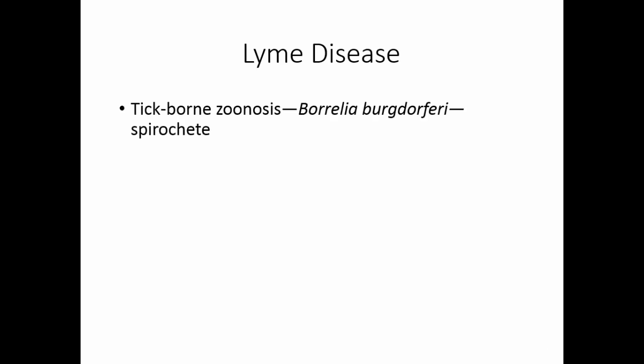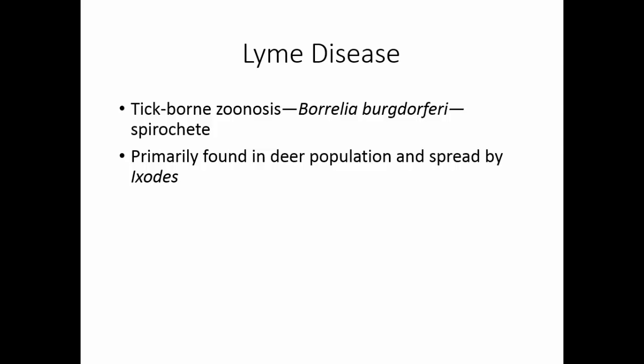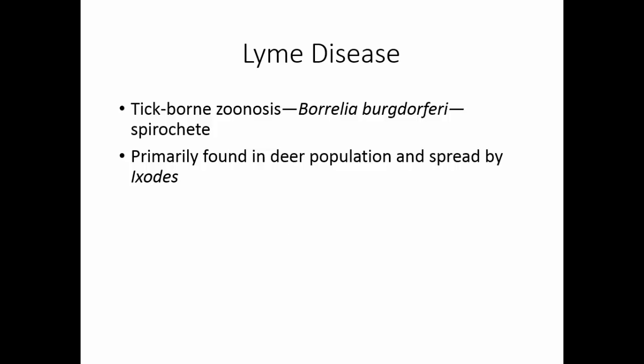Lyme disease is another tick-borne zoonosis. The causative organism is Borrelia burgdorferi, a spirochete — we don't discuss gram stain reactions on spirochetes because they're too delicate. These are spiral-shaped organisms best demonstrated using dark field microscopy. Borrelia is primarily found in the deer population and spread by the tick of the genus Ixodes, sometimes known as the deer tick. The most noticeable symptom is a red bullseye-type rash from the area of the tick bite. Neurological and cardiac symptoms can follow, as can arthritis, and some of these may be irreversible even after treatment.